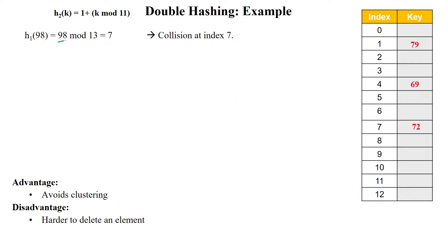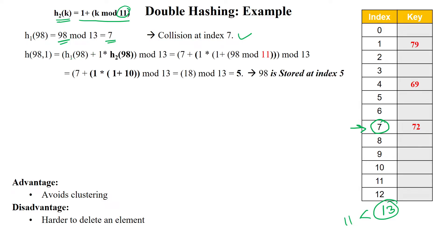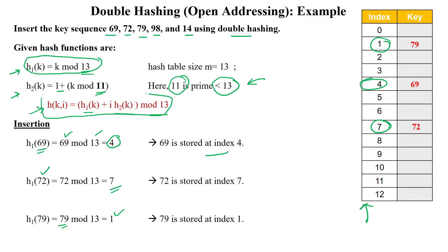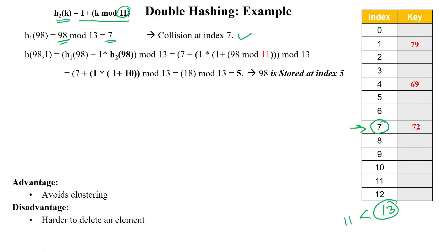Next, insert 98: 98 mod 13 = 7. However, index 7 already contains the value 72, so a collision occurs at index 7. We must apply the second hash function, which is 1 + k mod 11, using the prime 11 which is smaller than table size 13. Using the equation h1(k) + i × h2(k), with k = 98 and i = 1.